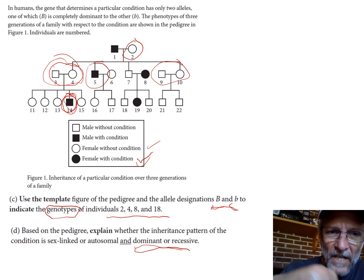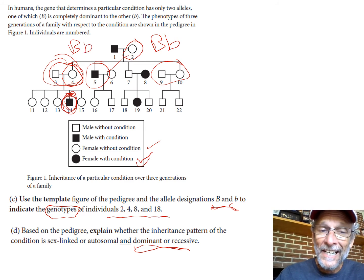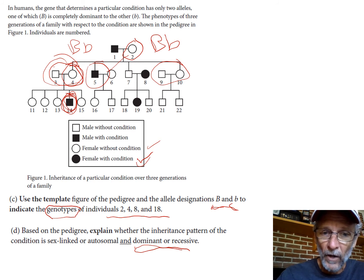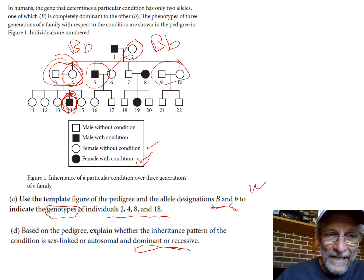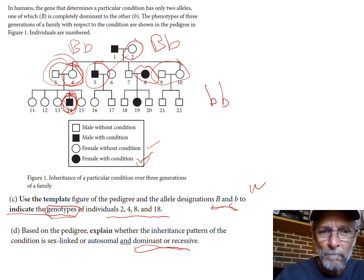Now that we've established that it's recessive, the condition, the colored in ones, individual number two has the dominant trait but it had this kid with the recessive trait, and that means this individual has to be heterozygous. Number four, just the same kind of logic, had a kid with the recessive trait but number four is dominant, so number four's genotype must be heterozygous. Notice they didn't ask you to explain any of that, so don't waste time explaining, just indicate their genotypes.